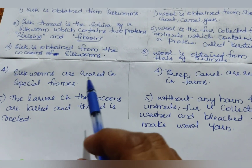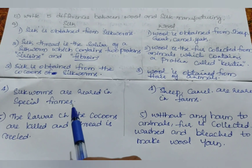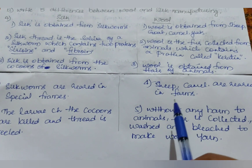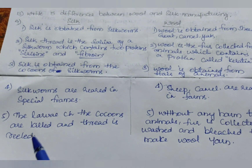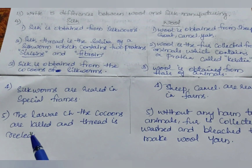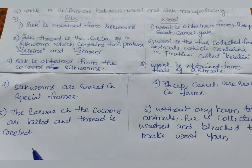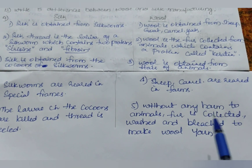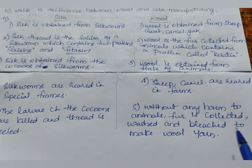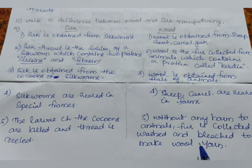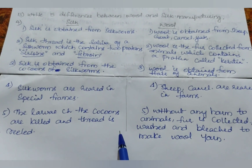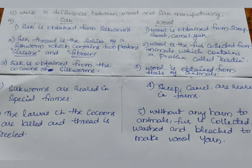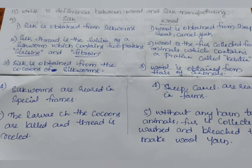Silkworms are reared in special frames; sheep and camels are reared in farms. The larva and the cocoons are killed and thread is reeled without any harm to animals. Fur is collected, washed, and bleached to make wool yarn. This is the last question; two more questions are activity-based questions that you have to write on your own.